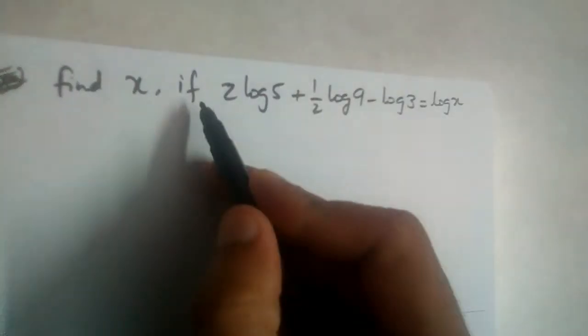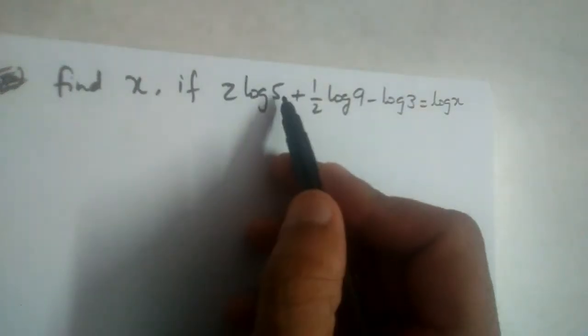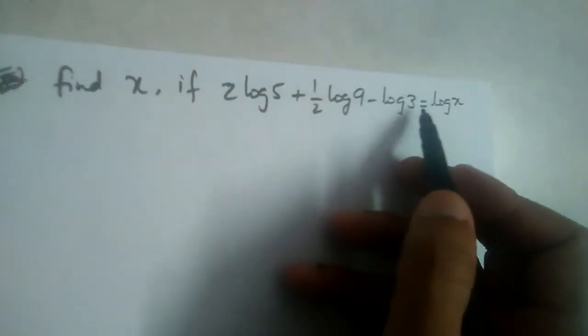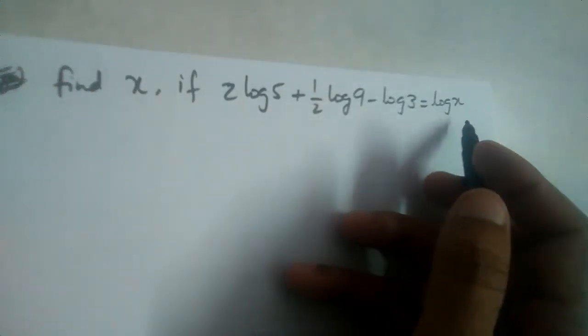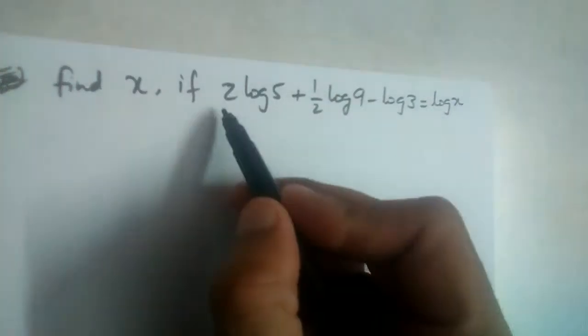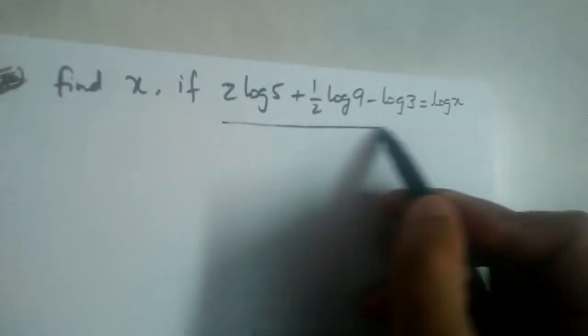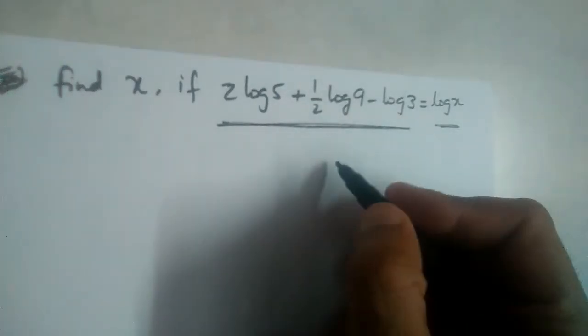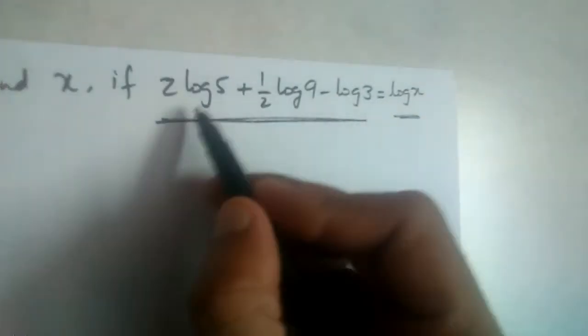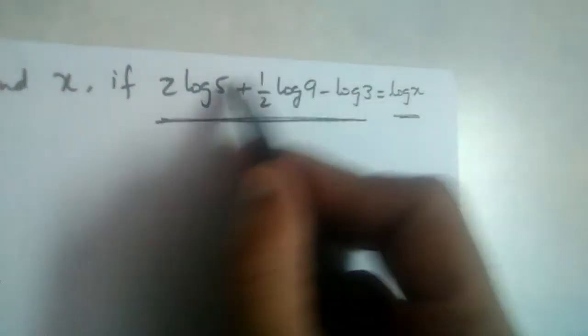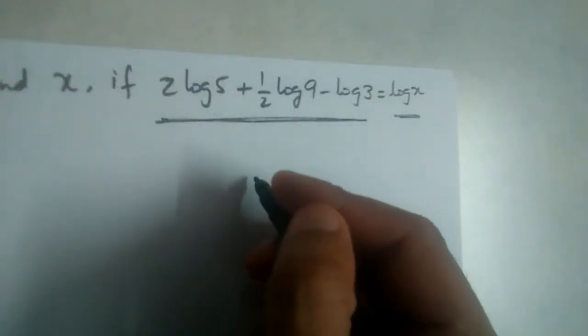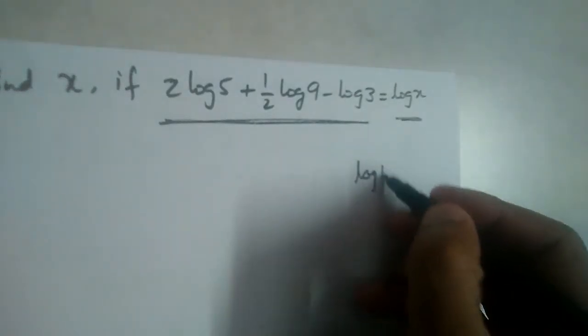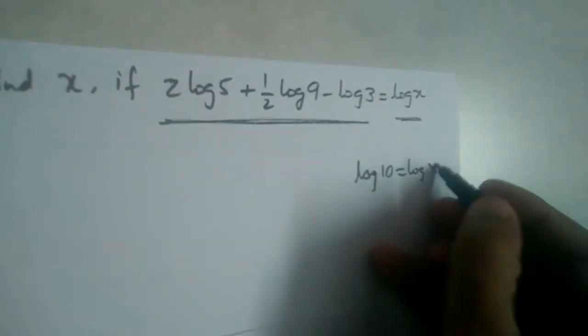Find x if 2 log 5 plus 1/2 log 9 minus log 3 is equal to log x. So see here on the left-hand side we have 3 logs, on the right-hand side we have 1 log, right? That means on the left-hand side also we should write it in single log, so that for example if we get log 10 equals log x, we can equate x with 10. So let us write this in single log.